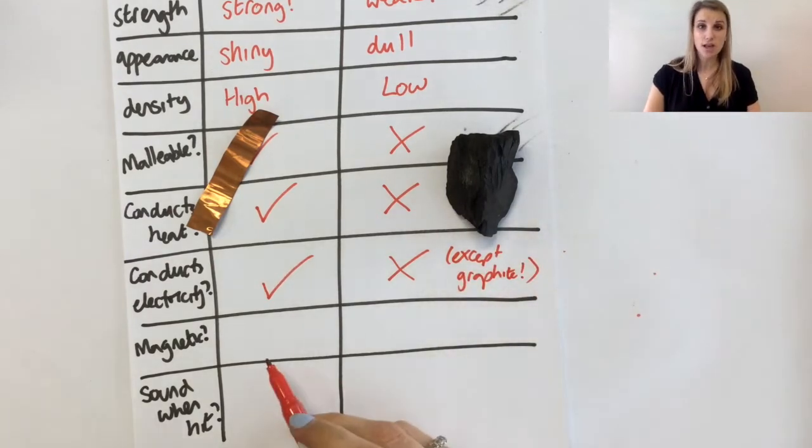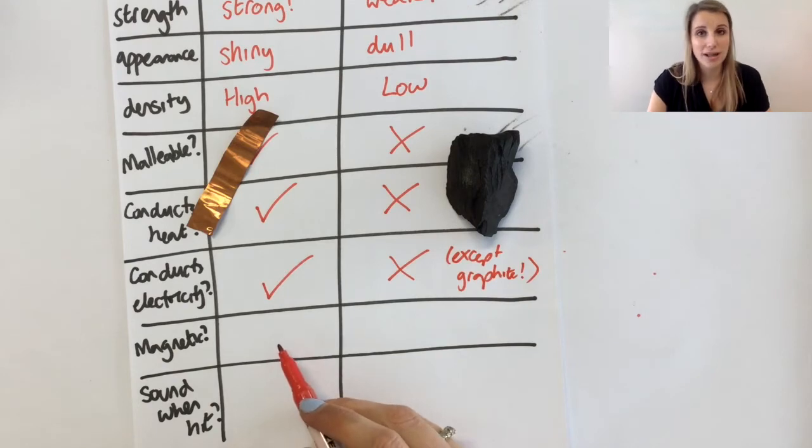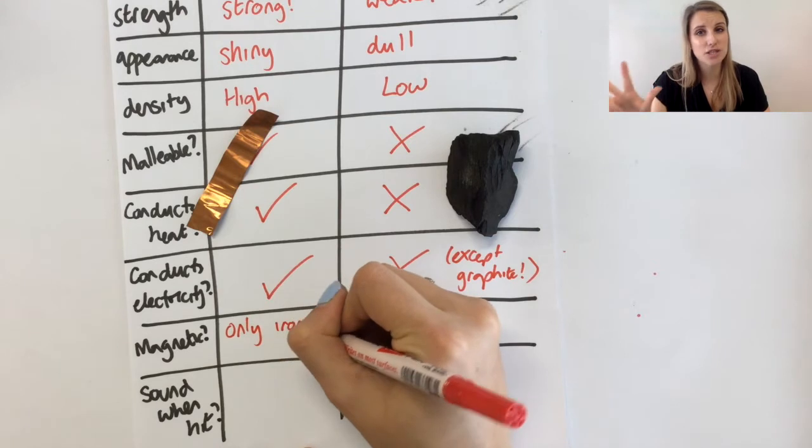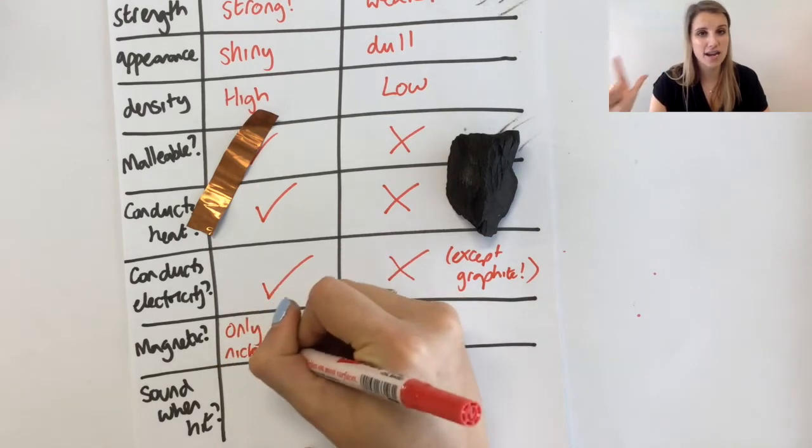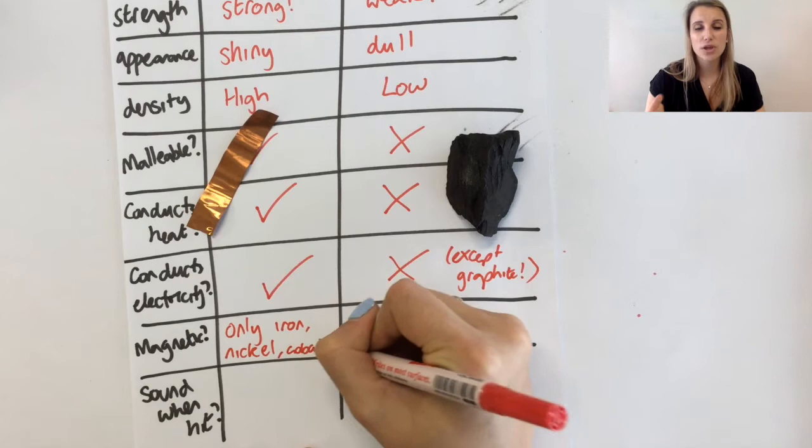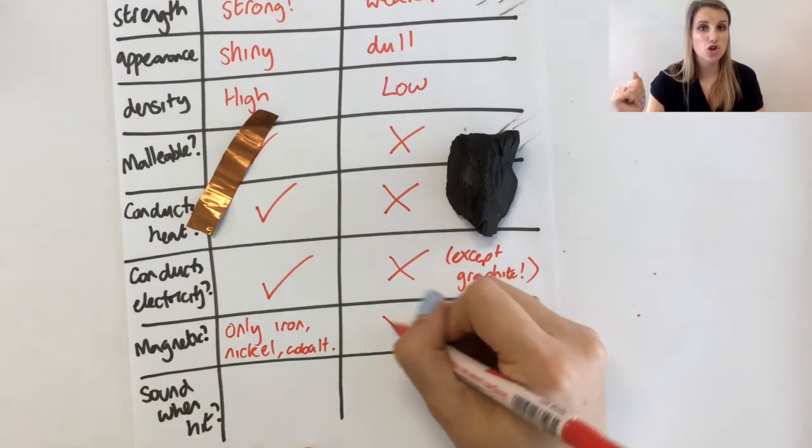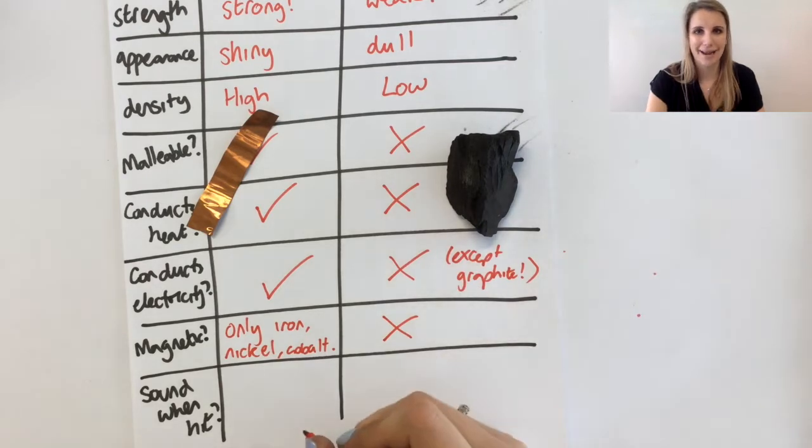Magnetic properties. You might think that all metals are magnetic, but that's not true. Only three metals are magnetic: iron, nickel and cobalt. You don't need to know that, but you should know that there are some metals that are magnetic. Non-metals are never magnetic.